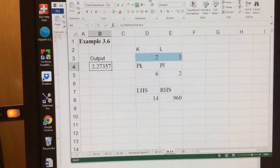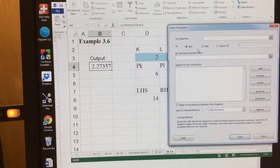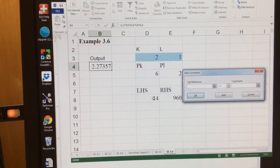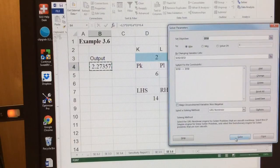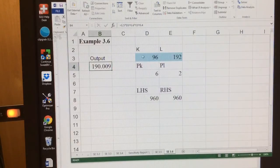So what we want to do is go to data, solver. We want to optimize our output by changing the amount of capital and labor with the constraint that the money we spend on capital and labor has to be less than or equal to our budget. And if I click Solve, I'll get 96 and 192.